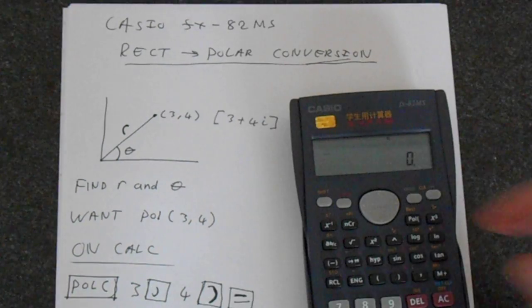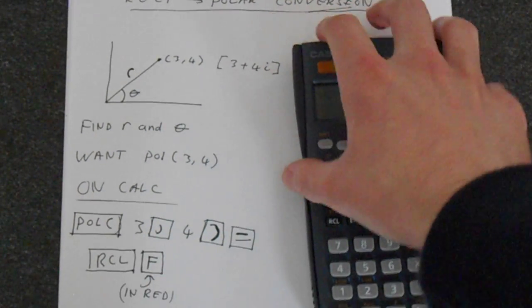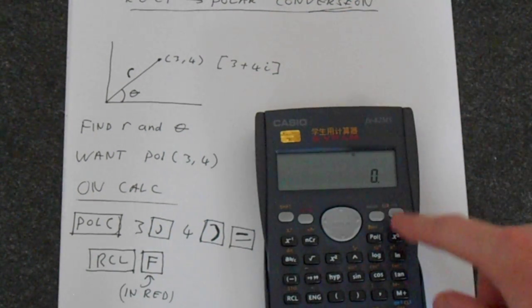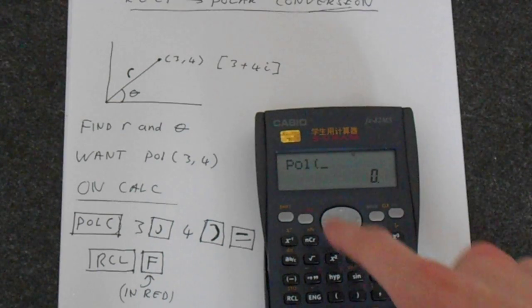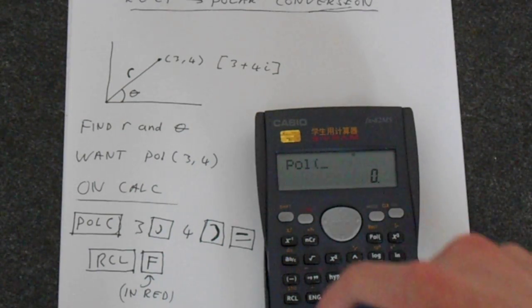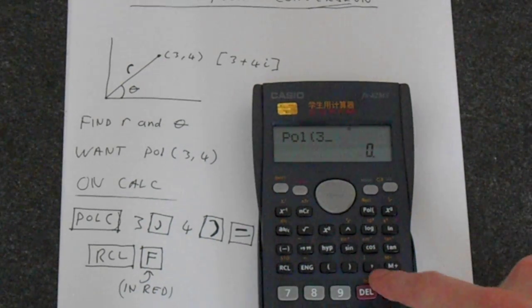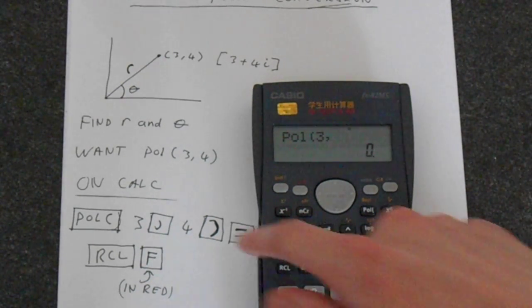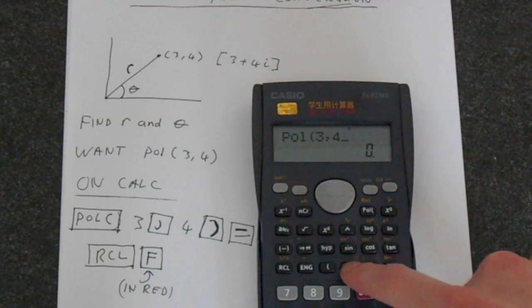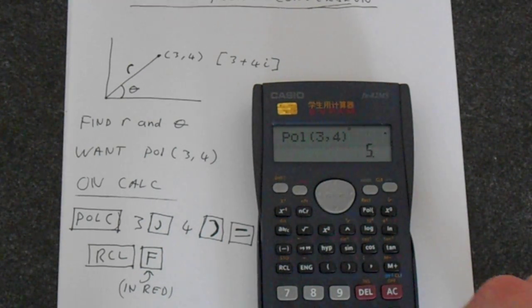And this is very simple to do, so we just access this polar button which is here. So it gives pole in the open bracket. Then if we put in 3, and there's a comma on the first row of these type buttons, and then we press 4, and we close the bracket, and you press equals.